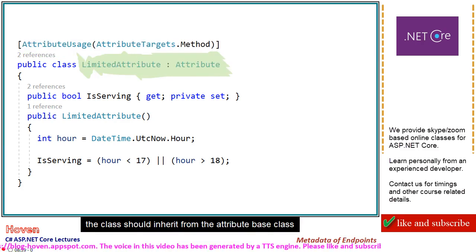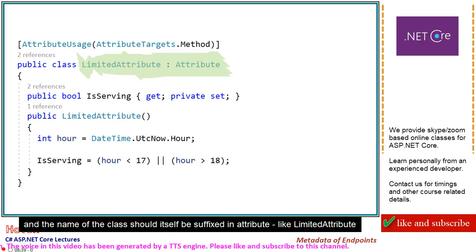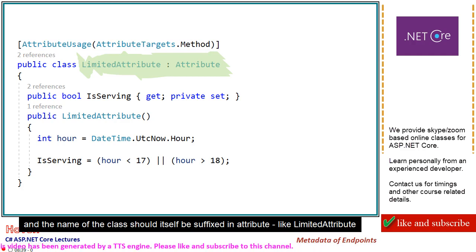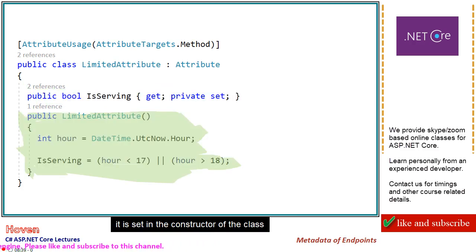The class should inherit from the attribute base class, and the name of the class should itself be suffixed with 'Attribute', like 'LimitedAttribute'. This is the property for our current requirements. It is set in the constructor of the class.